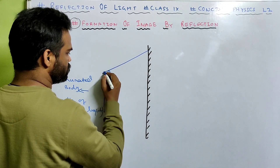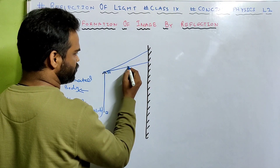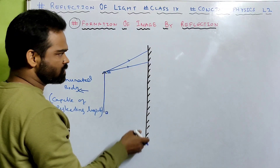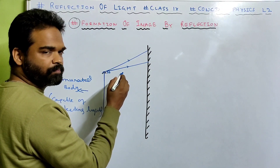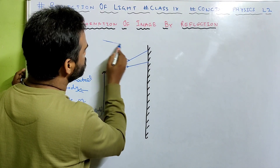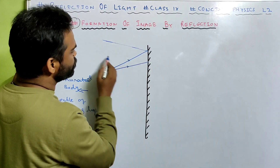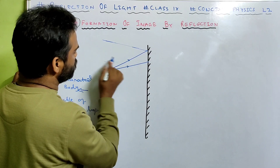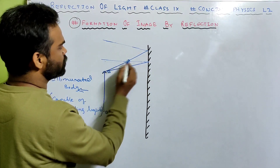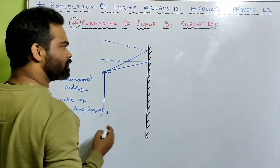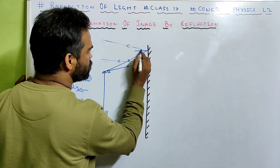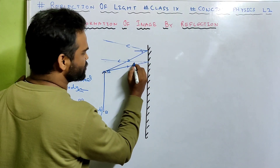I've taken two rays of light. As soon as they strike the surface, they will be reflected back in the same medium following the laws of reflection. Following the laws of reflection, this ray is reflected back. If you draw a normal, then the angle of incidence and angle of reflection has to be the same.